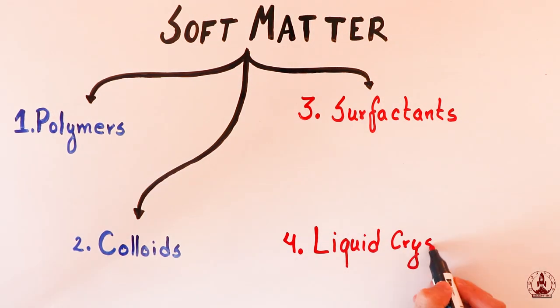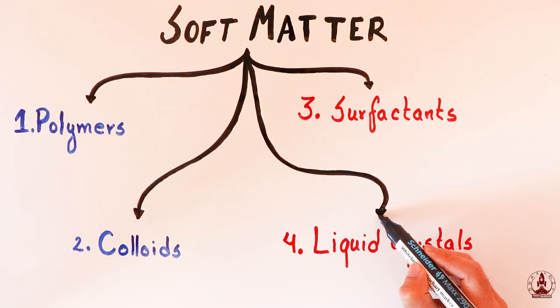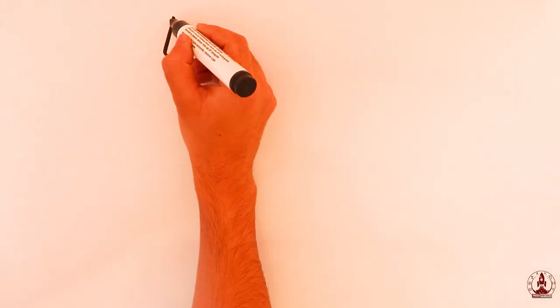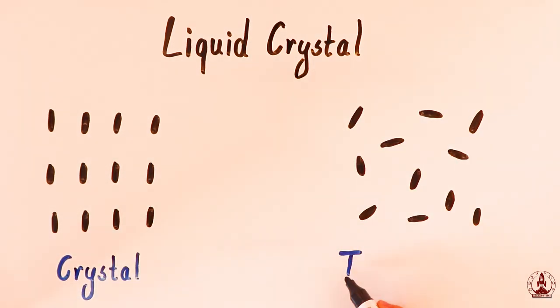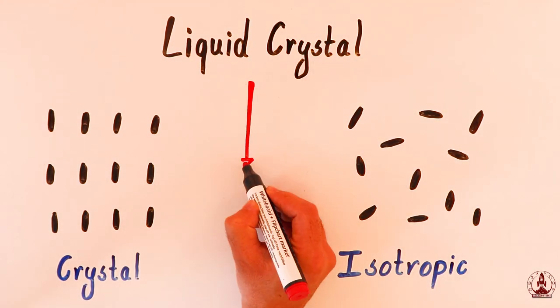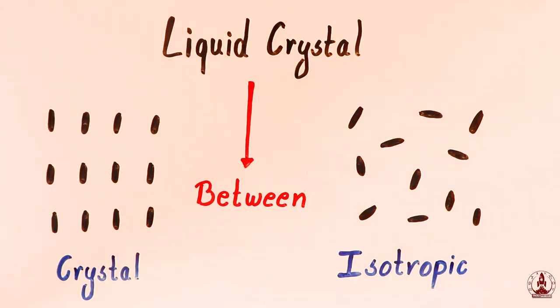This is the fourth or final video on soft matter physics focusing on liquid crystals. Liquid crystal consists of two words: liquid and crystal. A complete order material is a crystal and a disordered material is a liquid. This implies that liquid crystals refer to those materials that are in between these two phases, meaning liquid crystal behaves like a crystal but flows like a liquid.